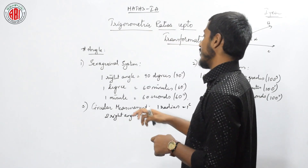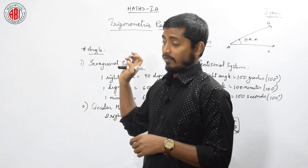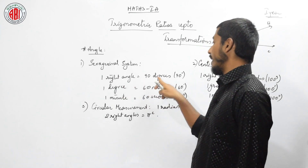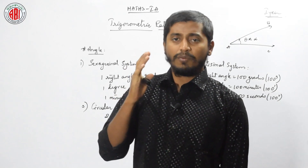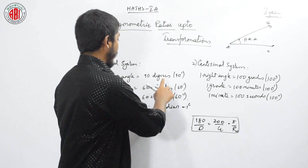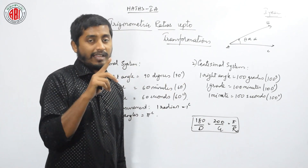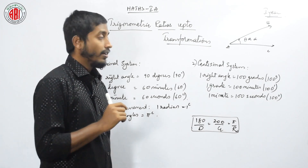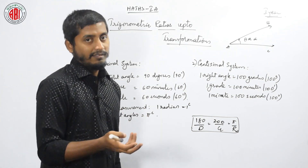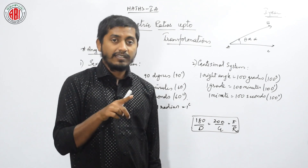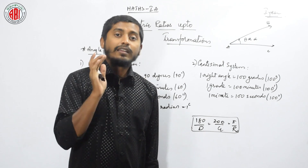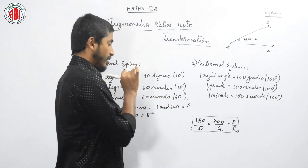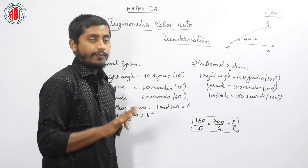The first classification is the sexagesimal system, which is popularly called the British system, actually introduced by them. Here, one right angle is always equal to 90 degrees. What is one degree? One degree is a 60-minute rotation — it will move 60 minutes. For one degree it is 60 minutes. Similarly, one minute is again 60 seconds. One minute is 60 seconds, one degree is 60 minutes, and one right angle is 90 degrees. So we have seen four different names: right angle, degree, minute, and seconds.